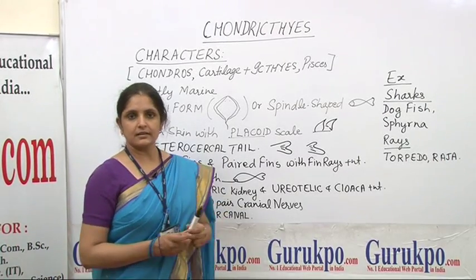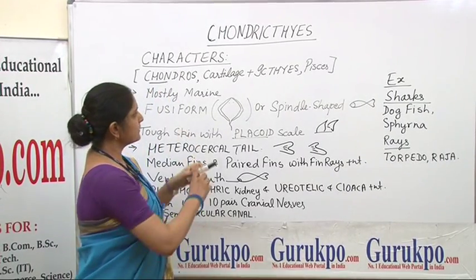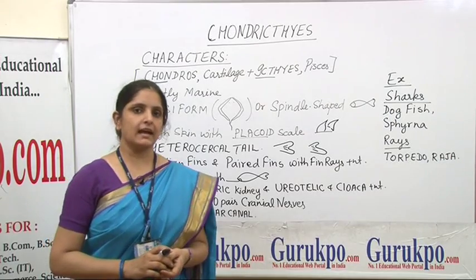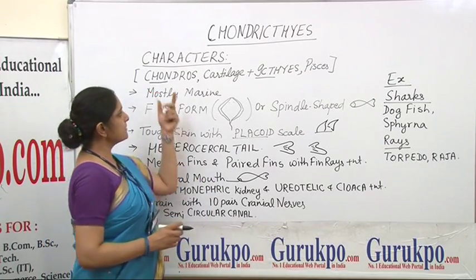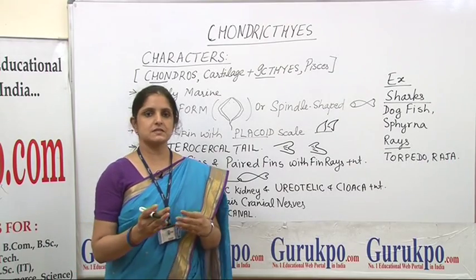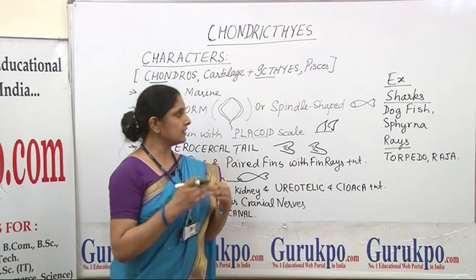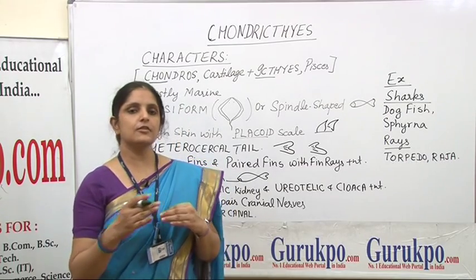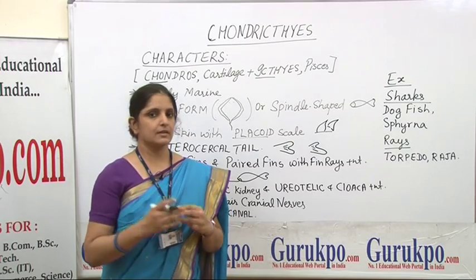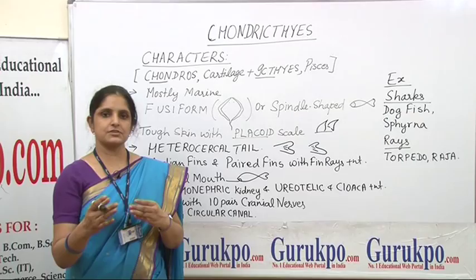Chondrichthyes is the word derived from two Greek words: one is Chondros and another is Ichthys. Ichthys is the word for fishes and Chondros means cartilage. It means Chondrichthyes are those fishes which have a cartilaginous skeleton. Their endoskeleton is made completely of cartilage, and cartilage is present throughout the lifetime. So Chondrichthyes are commonly called cartilaginous fishes.